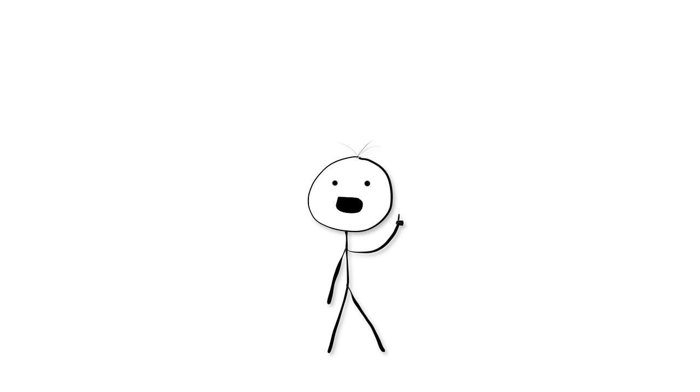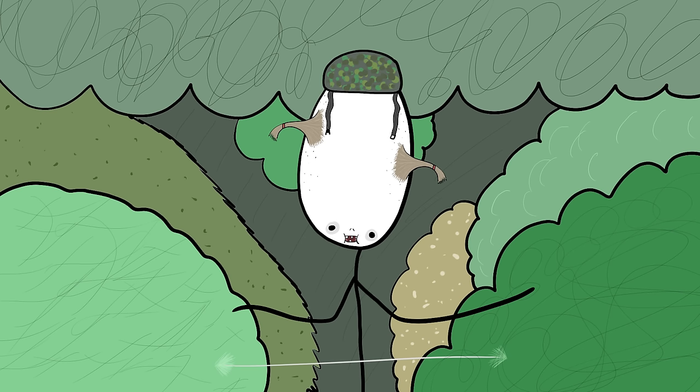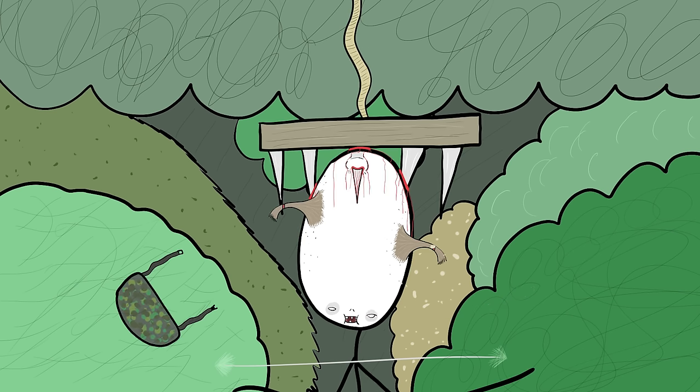There was also another trap called the raft. This was a large, heavy wooden block that had razor sharp spikes sticking out of it. And when the wire was hit, the wooden block would fall from out of the trees and impale the soldier's head.